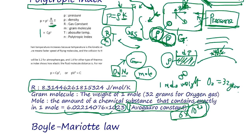Basically, pressure equals a constant times density to the power n. The polytropic index n depends on the type of gas — whether it's atmospheric or contained — and typically ranges from 1.2 to 1.4.